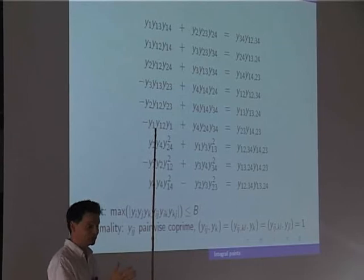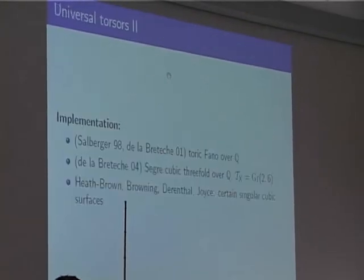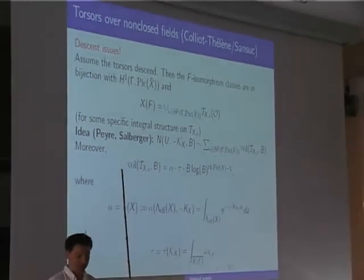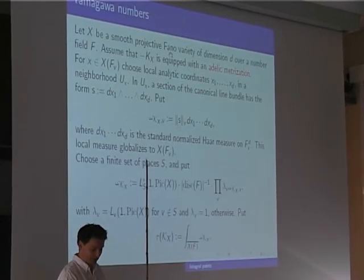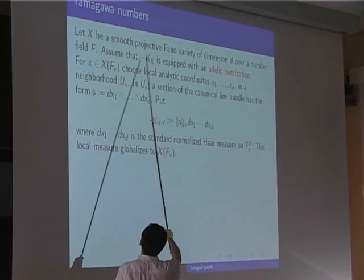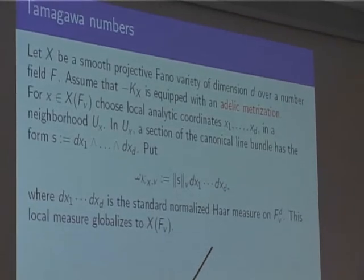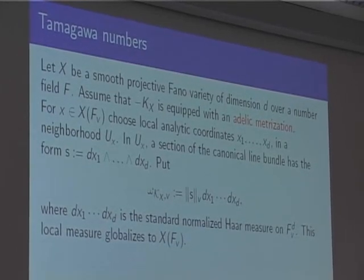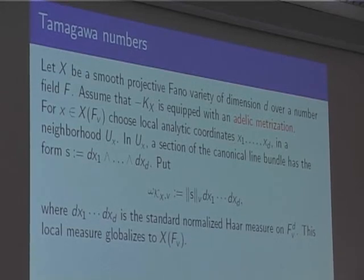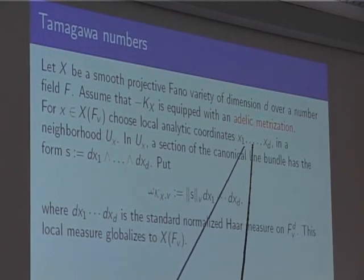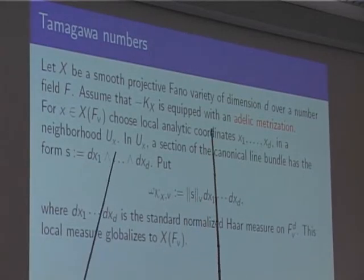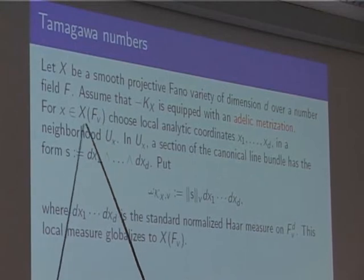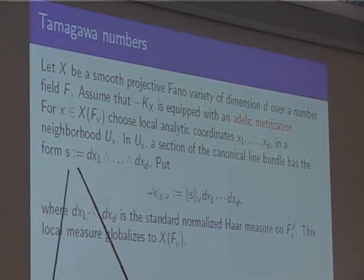Now I would like to explain the constant τ that appeared in the asymptotic formula and also in our harmonic analysis. Suppose -(K_X) is equipped with an adelic metrization — norms at all places. Choose local analytic coordinates in a neighborhood of a v-adic point; on that small ball, a section of the canonical line bundle looks like a function, and you take its norm to get a v-adic number.